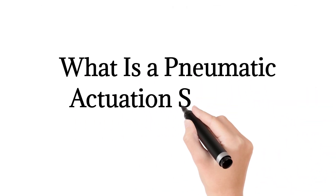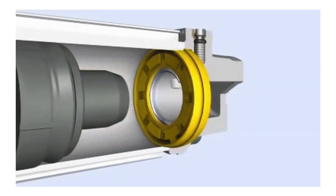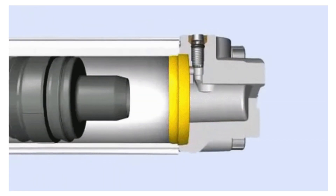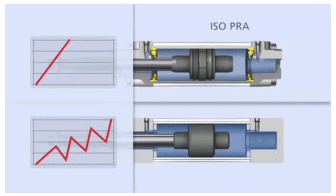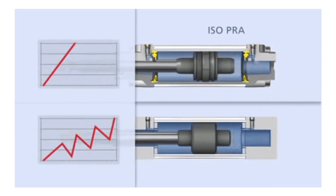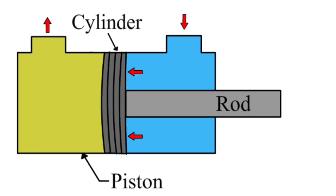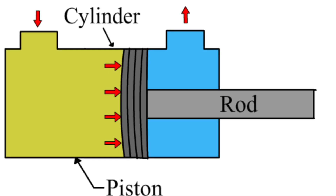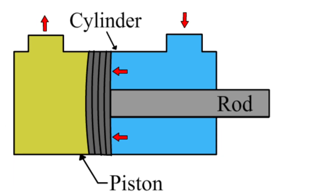Pneumatic actuators are highly reliable, efficient, and safe sources of motion control that use pressurized air or gas to convert energy into rotary or linear motion. They are especially appropriate for the repeated opening and closing of valves and other industrial applications where the use of electricity may cause a fire or ignition hazard. Actuators are commonly used to control the valves that direct the movement of fluids in the chemical and process industries.